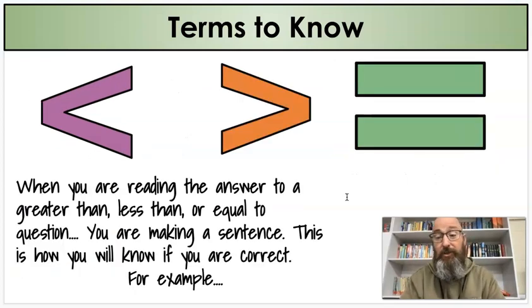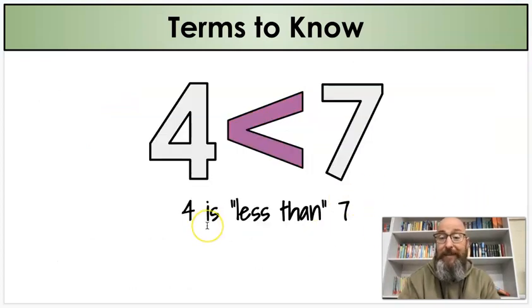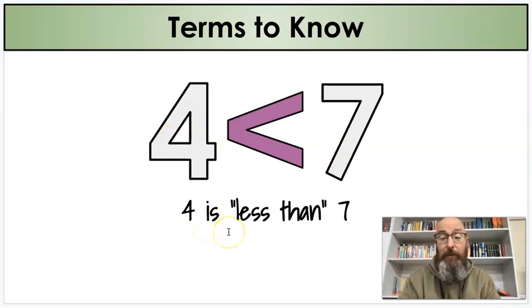So when you're reading the answer to a greater than, less than, or equal to question, you're making a sentence. This is how you know if you are correct. For example, four is less than seven. That's a sentence. Four is smaller than seven, so we know it's less than seven.